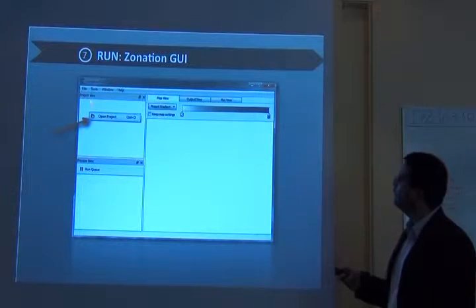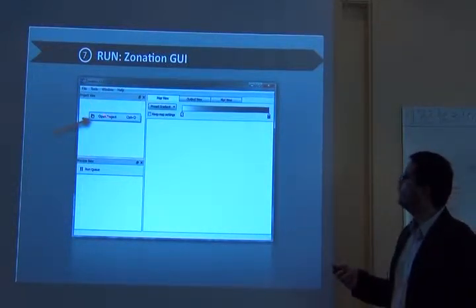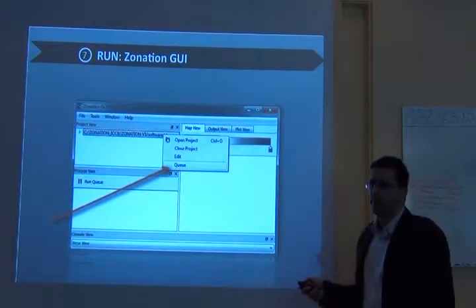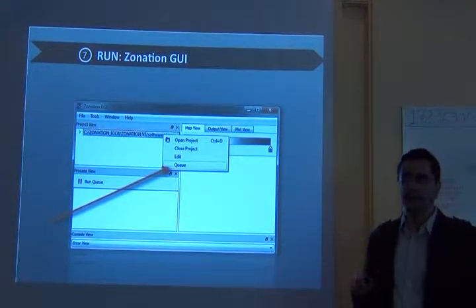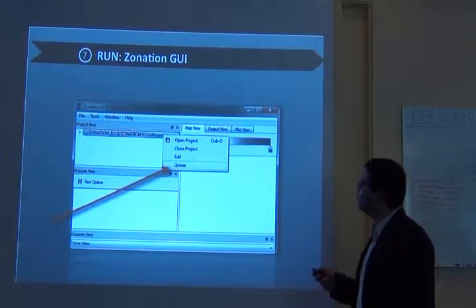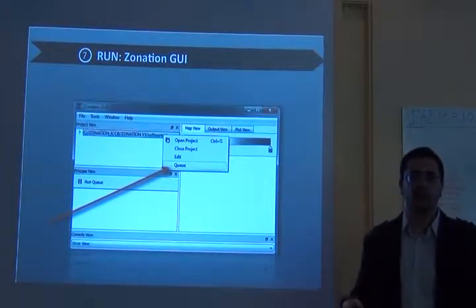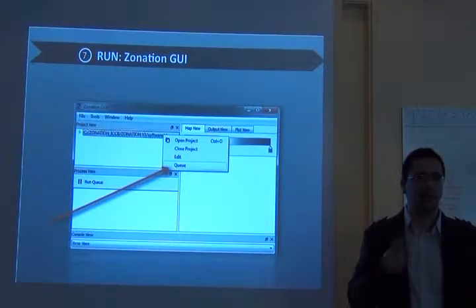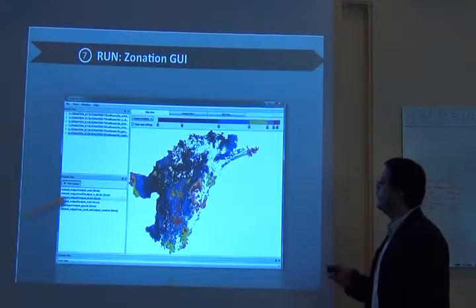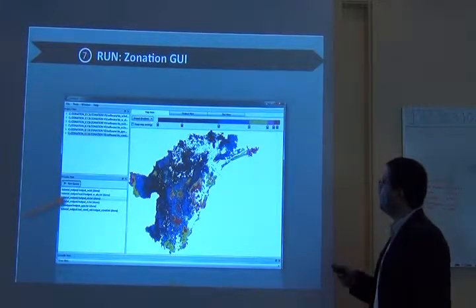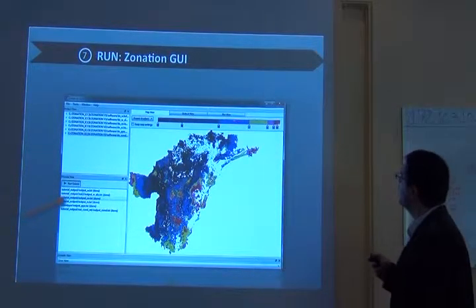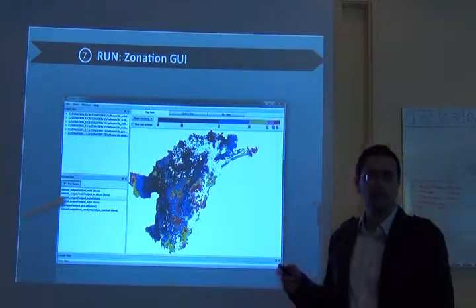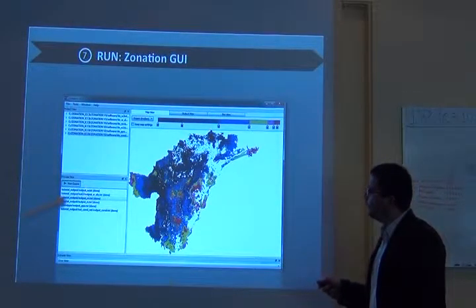So zonation also has a graphic user interface. It will look like this. You do right-click with your mouse or trackpad. It will appear this button to open project. You open a project. That will be that .bat file that has the command line. Then it opens a project here. You can do right-click again. And then you press Q. And it starts doing the analysis. It will read all the files and check the consistency of files. And if everything is okay, it will start running.